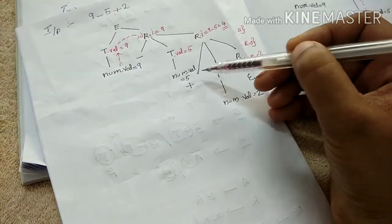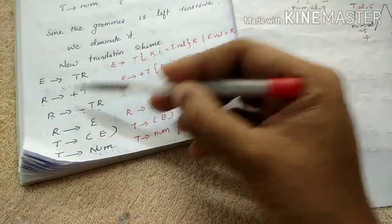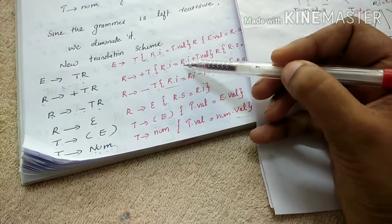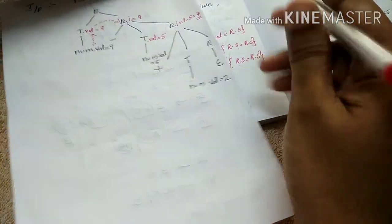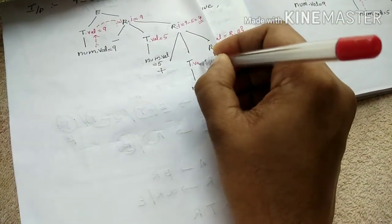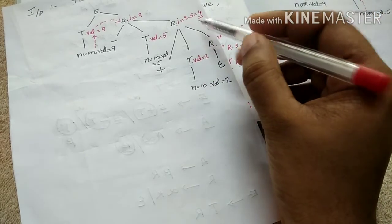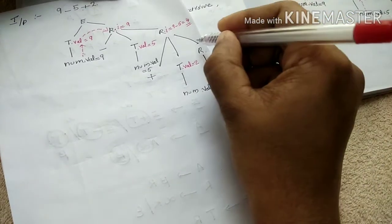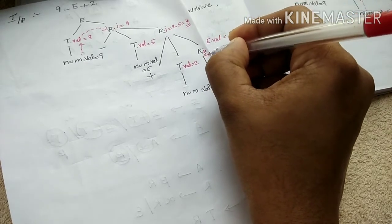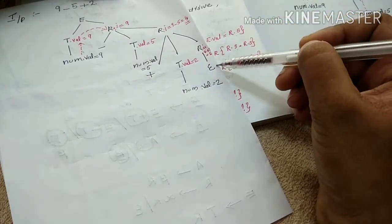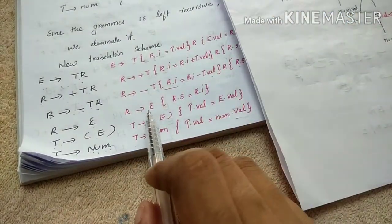Then we apply R equals plus T-R. R plus T-R is a semantic action. R.i equals R.i plus T.val. R.i is currently 4, and T.val is 2. So R.i equals 4 plus 2, which gives R.i equals 6.